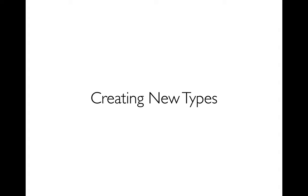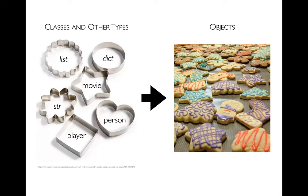They call it object-oriented programming, and you've been dealing with objects for a long time. You've seen how you can create multiple list objects or multiple dictionary objects. It's kind of a funny name. I think what object-oriented programming is really about is not creating new objects, but creating new types of objects. The analogy people often make is that it's almost like making cookies — cookies are like objects, and there are different types of objects.